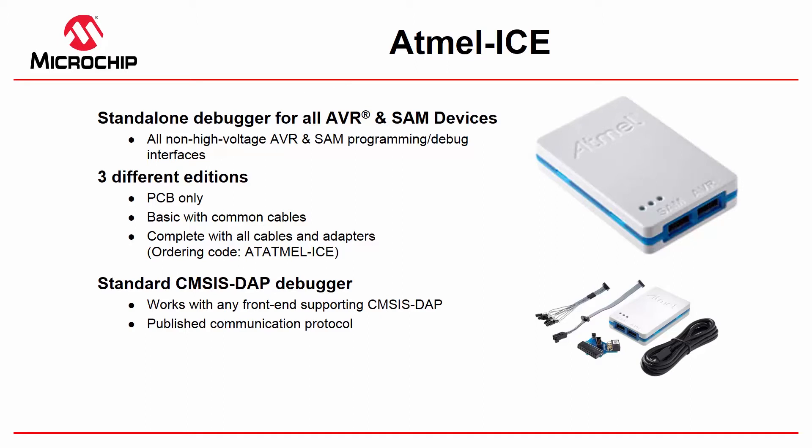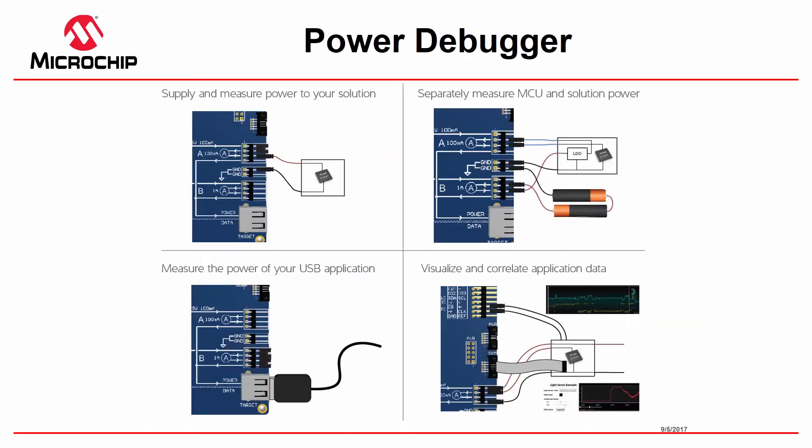It is the standard CMSIS-DAP debugger, so it works with any front-end supporting CMSIS-DAP, and there's a published communication protocol. The Power Debugger has a number of major use cases: to supply and measure power of the application, separately measure MCU and solution power, measure the power of a USB application, as well as visualize and correlate application data.